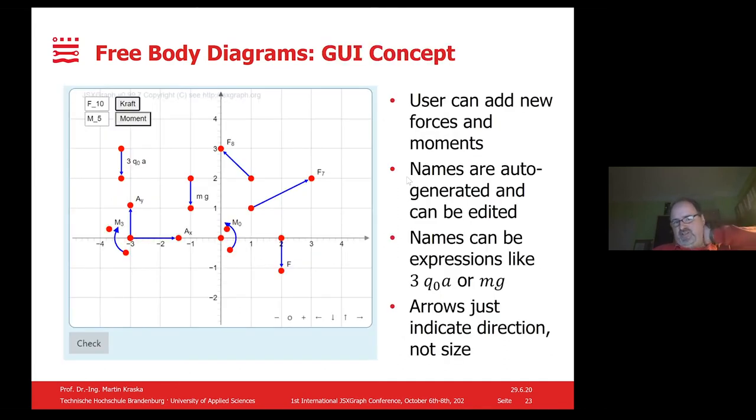What is the basic requirement for a free body diagram editor? You need to add forces and moments and provide appropriate names. These names can be expressions as well, like m times g for the weight, or 3q0a for the resultant of a distributed load. An important aspect is that these forces are not known in advance usually, so you just provide unit vectors in a sense. They don't need unit length, but their direction and point of application count.